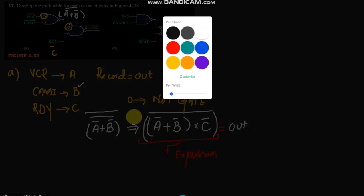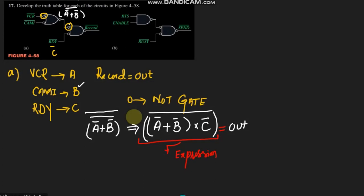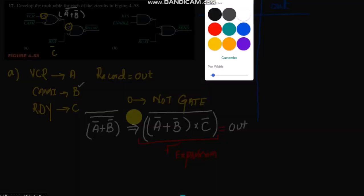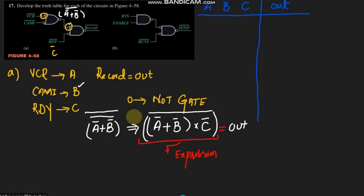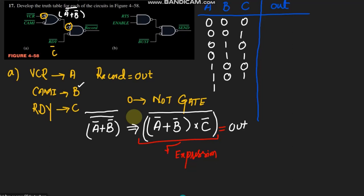Now on the basis of it, let me draw the truth table. Here we have inputs a, b, c and here we have 'out'. Now writing all the possible combinations of a, b, and c: 0,0,0 — 0,0,1 — 0,1,0 — 0,1,1 — 1,0,0 — 1,0,1 — 1,1,0 — and the last one is 1,1,1.